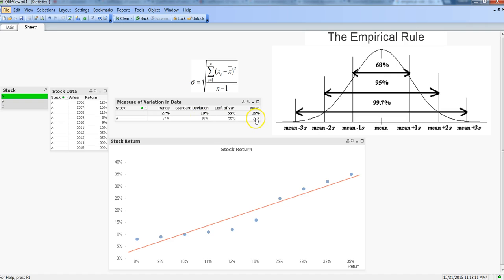My mean is 19% and my standard deviation is 10%. If I subtract one standard deviation (10) from 19, I get 9%, which is here. When I add 10 to 19, I get 29%, which is here. So from 9% to 29%, 68% of my observations are contained.